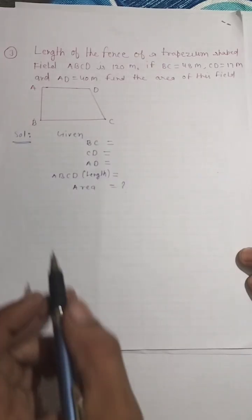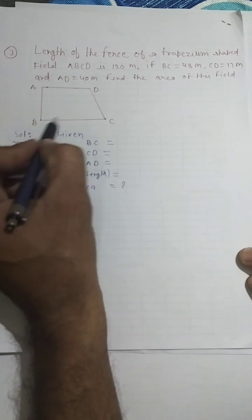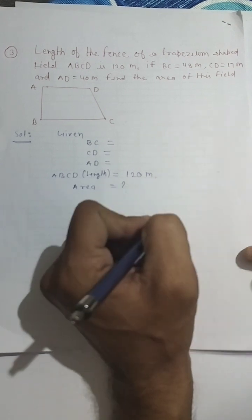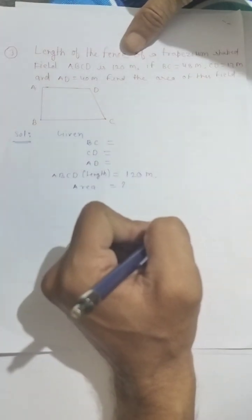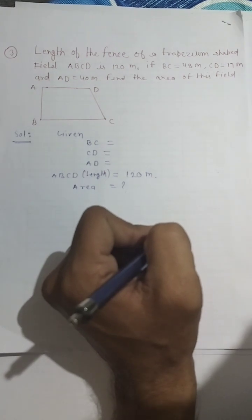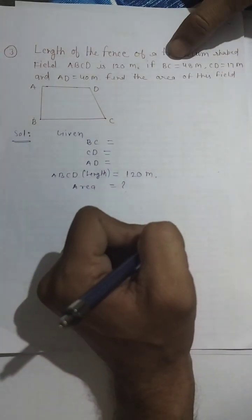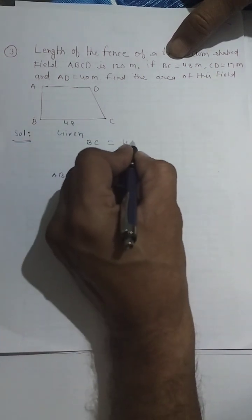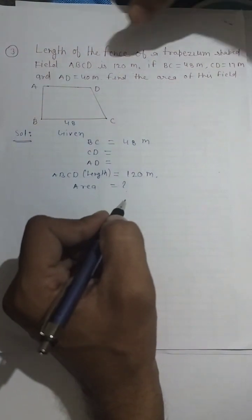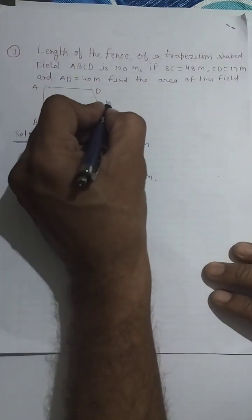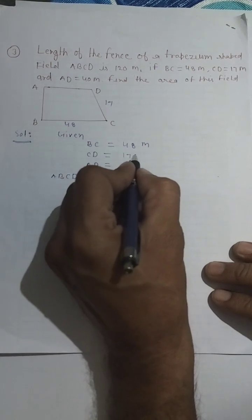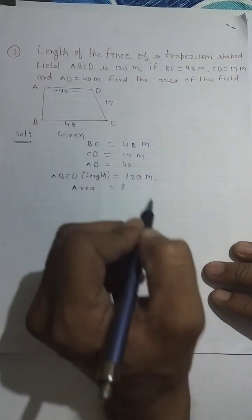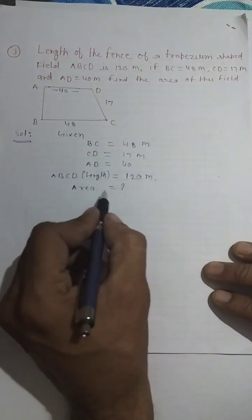Let's understand this with a figure. The total length ABCD is 120 meters given. BC is 48 meters, which is the parallel side. CD is 17 meters. And AD is the other parallel side, which is 40 meters.